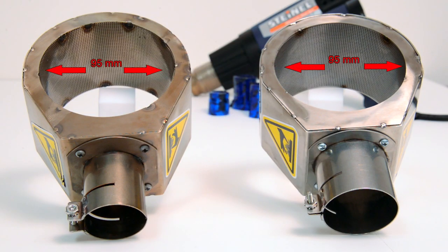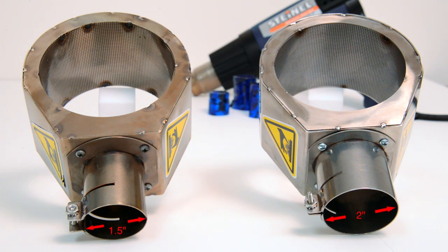UltraClean offers 95mm ID diffusers to accommodate all CleanSeal capsule sizes. Diffusers come with a one and a half or two inch inside diameter connection for customers who already have a temperature adjustable heat gun.